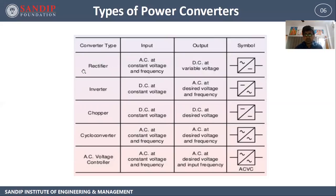A rectifier is a power converter that converts AC at constant voltage and frequency to DC at variable voltage — basically it converts AC to DC. An inverter is a power converter that converts DC at constant voltage to AC at desired voltage and frequency — basically it converts DC to AC.